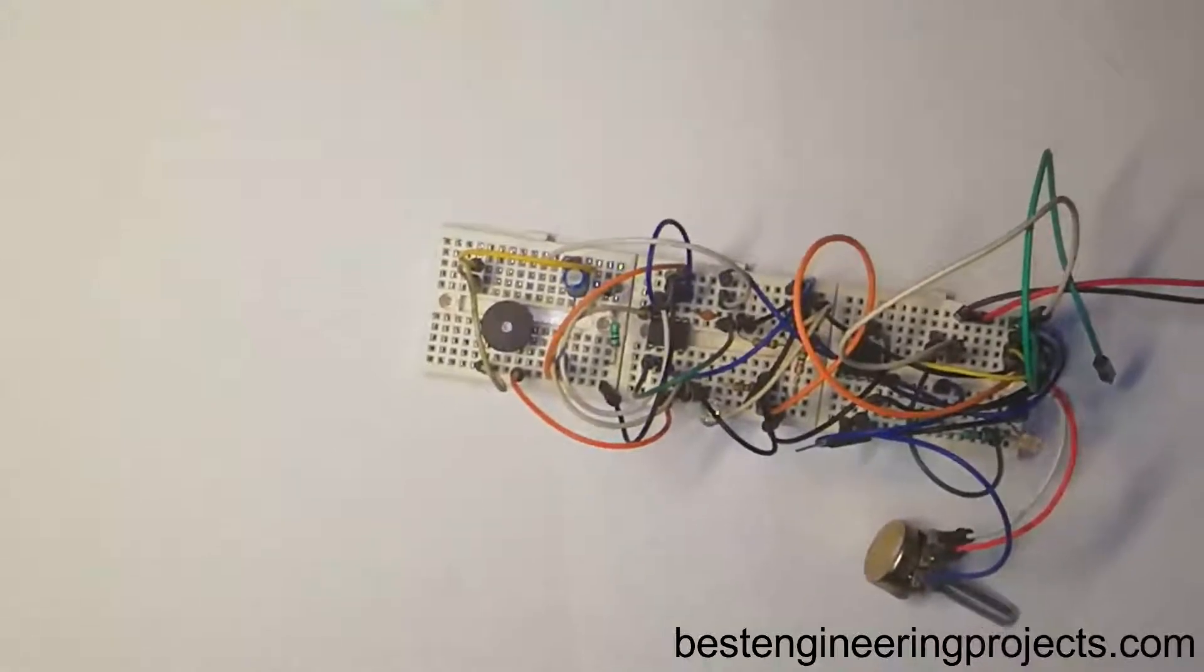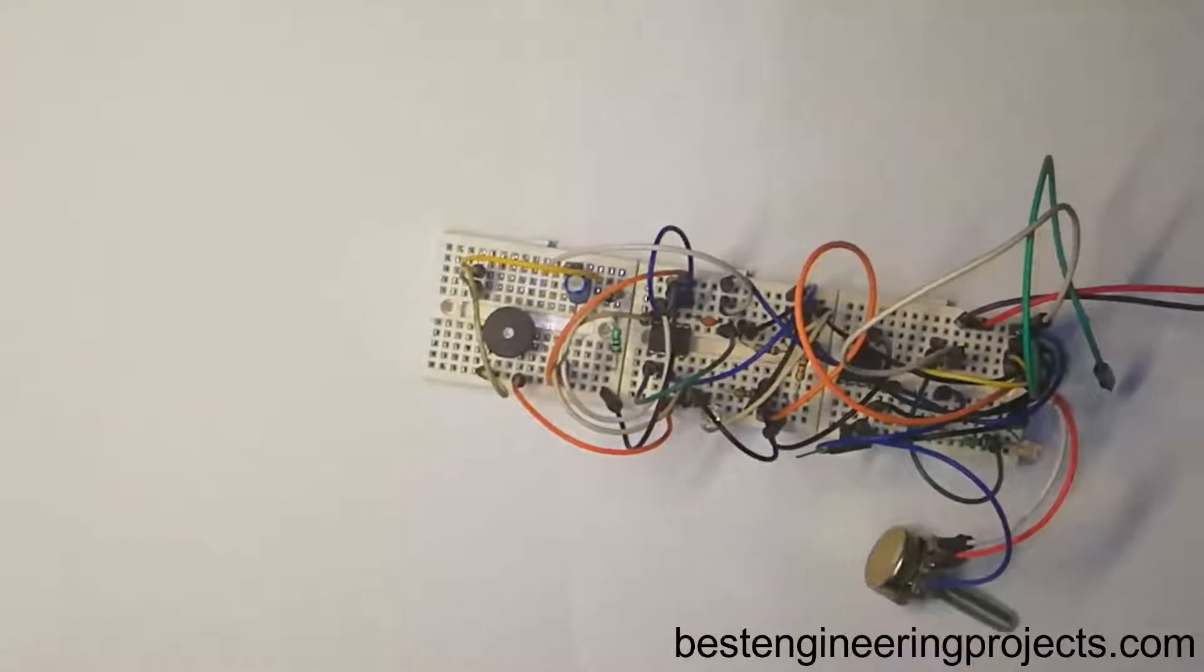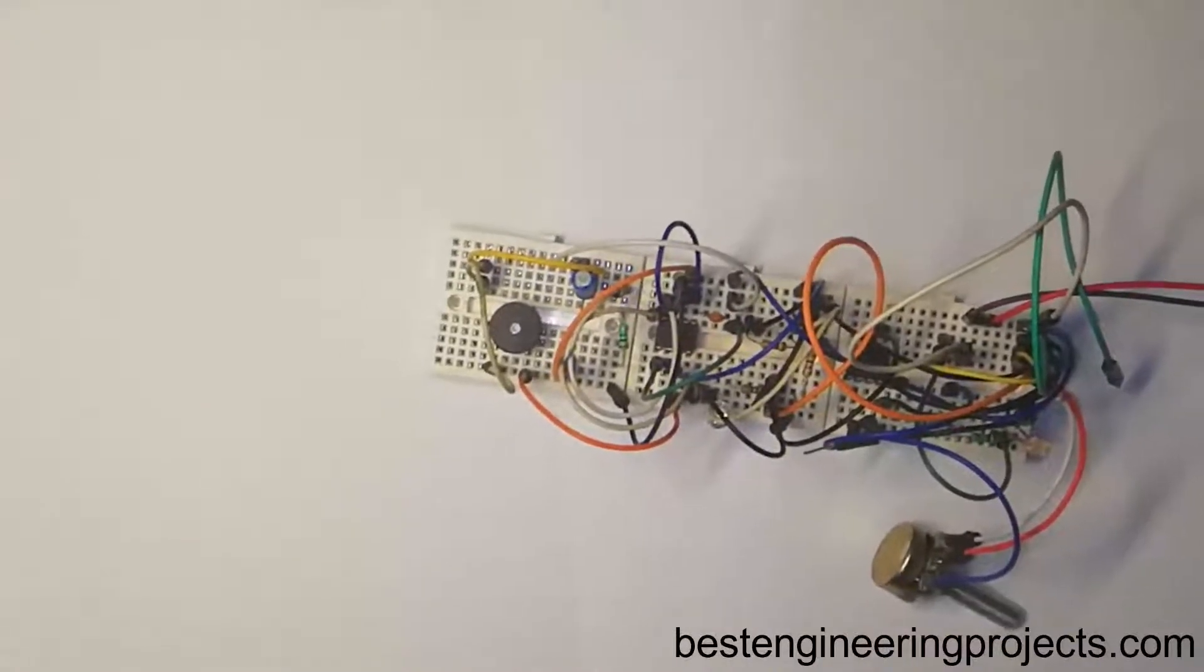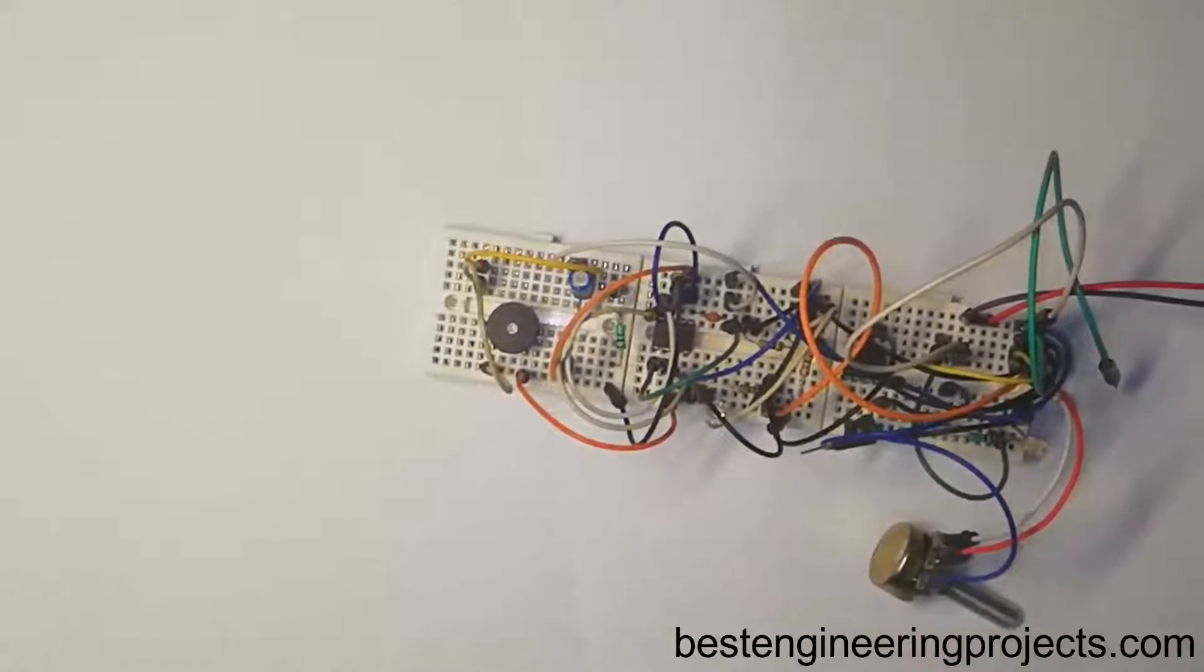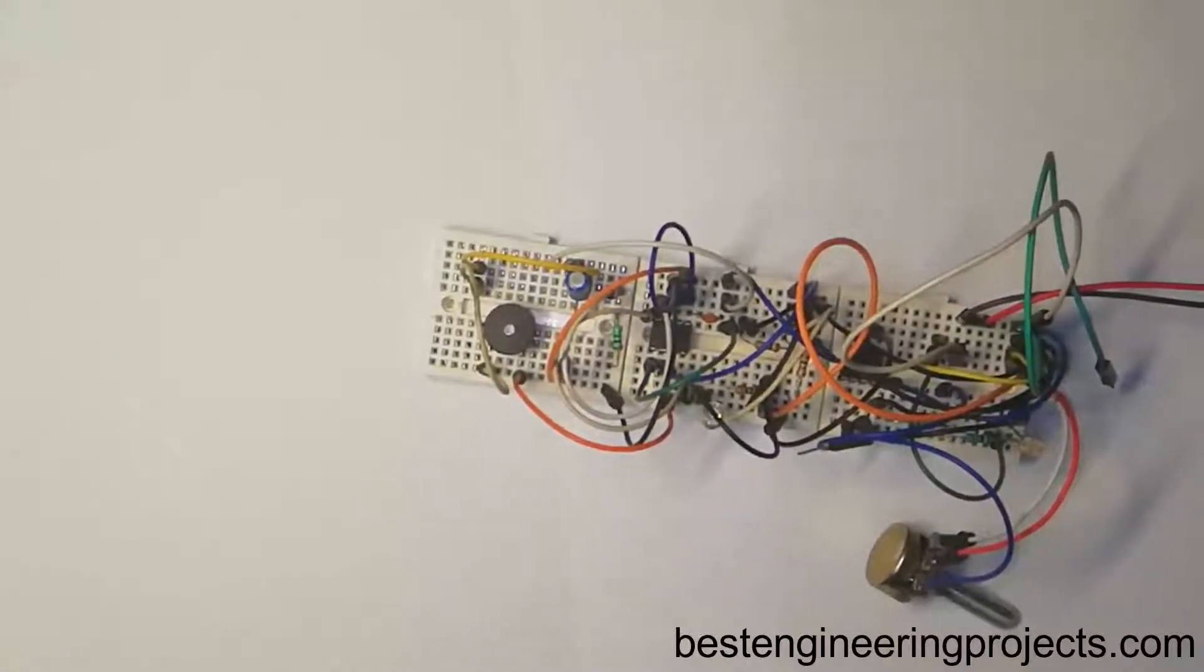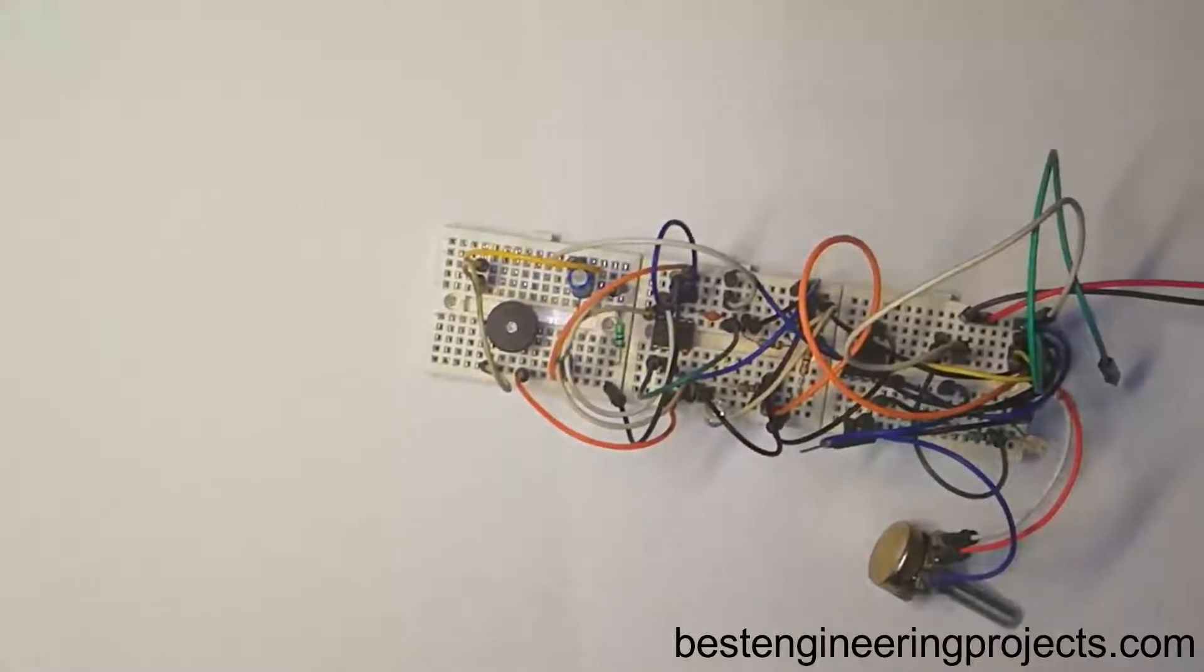But the problem with those circuits is they require high precision alignment. To overcome this problem we designed a very sensitive automatic fence lighting circuit. We had not used any inbuilt light source. You can place this circuit within the line of sight to any light source like sunlight or electric light.